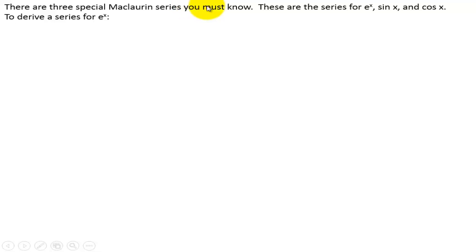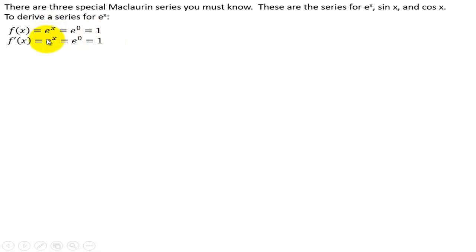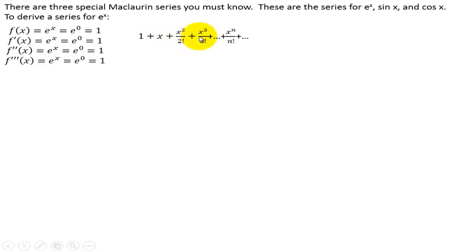There are three special Maclaurin series you must know: the series for e to the x, sine of x, and cosine of x. To derive a series for e to the x, we find the value — this is the Maclaurin, so we're centering at 0. The first derivative is still e to the x, so that's 1. The second derivative is 1, third derivative is 1, and so on. So the polynomial ends up being 1 plus x plus x squared over 2 factorial plus x to the third over 3 factorial. The series for e to the x ends up being x to the n over n factorial.